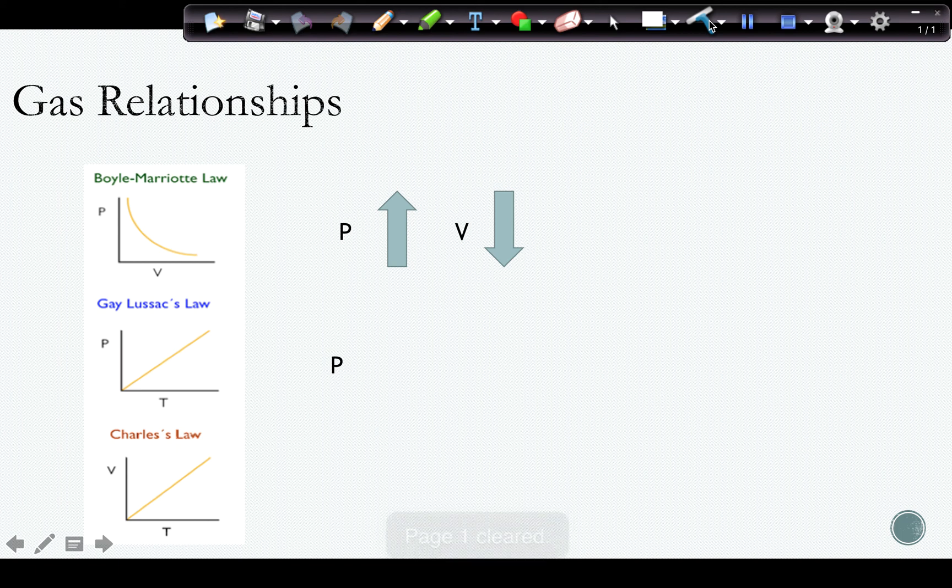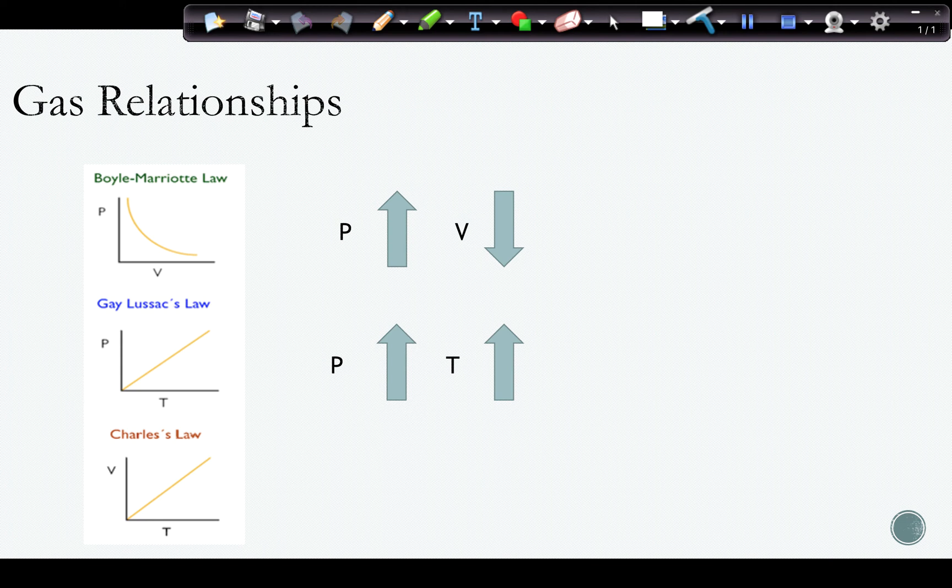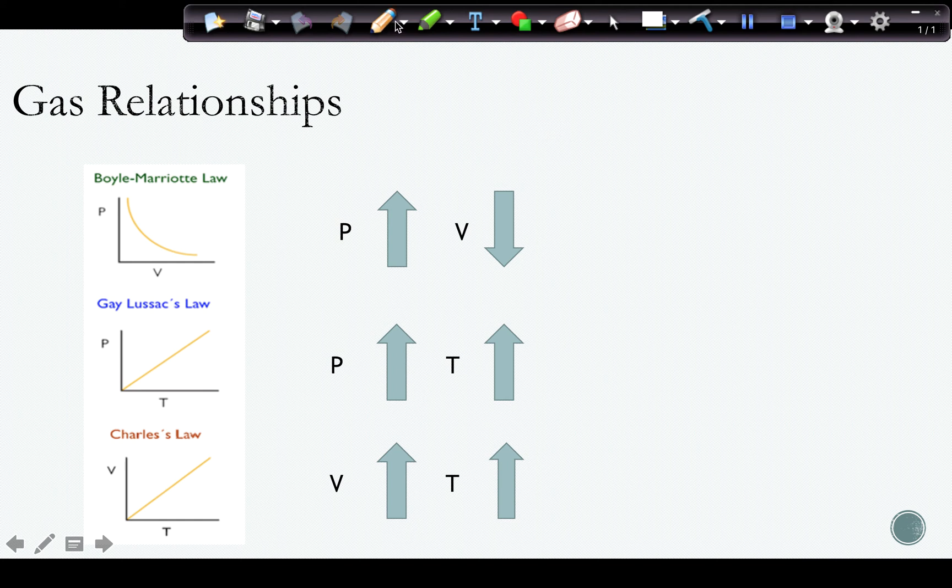As pressure goes up, volume goes down. It's an inverse relationship. As pressure goes up, temperature goes up. That's a direct relationship. As volume goes up, temperature goes up as well. One of the things that I note is that the one relationship that doesn't have temperature in it is the one that is inverse. The other two relationships have temperature in them and they are direct relationships.